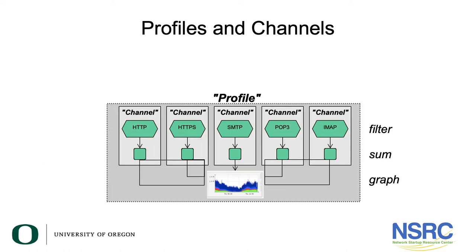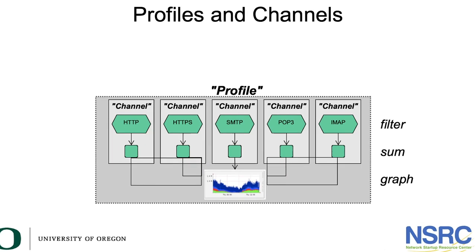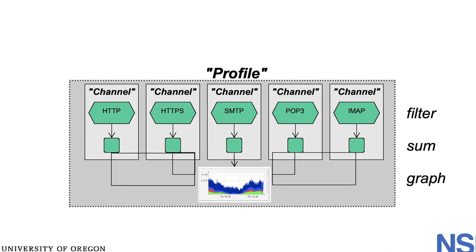The slide shows an example of how you might set up profiles and channels. We've set up a profile here with five different channels: one channel of HTTP, another of HTTPS, another of SMTP, another of POP3, and another with IMAP. And we've gathered all these together to produce a graph with different colors showing the traffic levels of each particular channel.